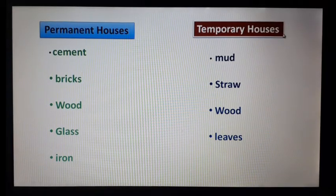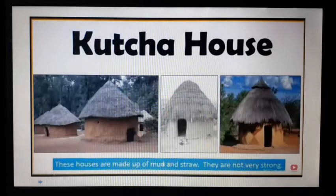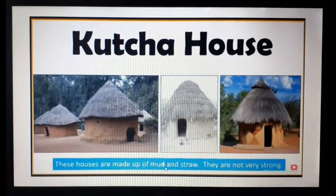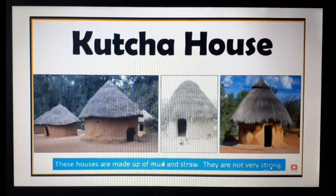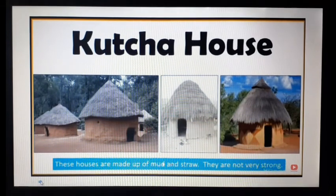Temporary houses are made up of mud, straw, wood, leaves, bamboo etc. Kaccha houses are made up of mud and straw and they are not very strong. As you can see in the picture, these houses are made up of mud, straw, bamboo or leaves.